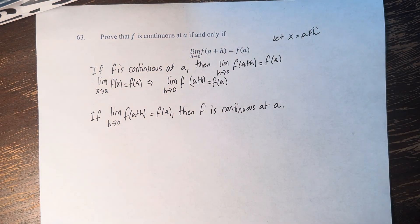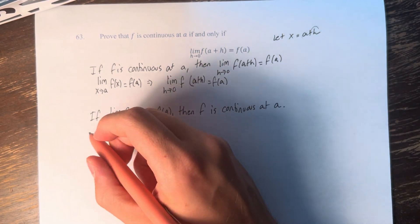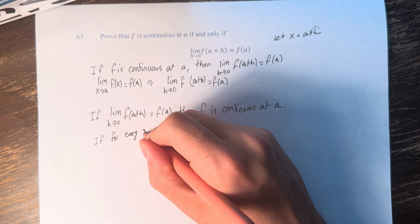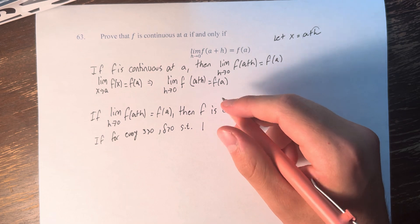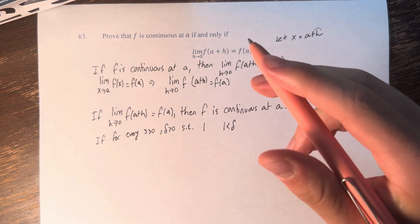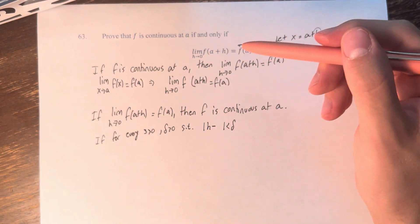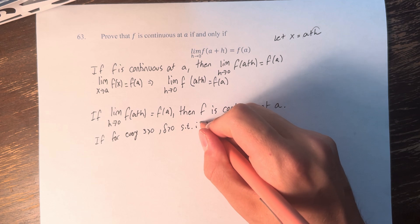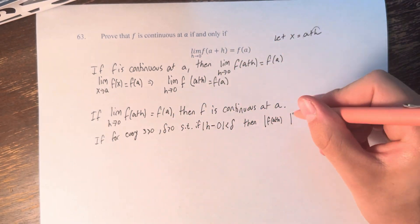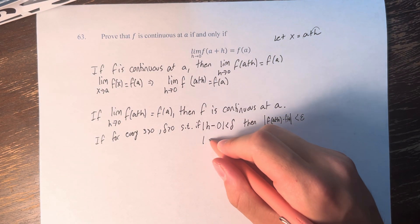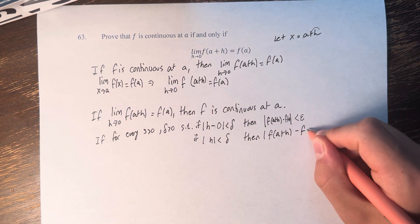Now we have to do the opposite, which is going to involve the precise definition of a limit. That states that the limit exists if for every epsilon greater than 0, there's a delta greater than 0, such that if the absolute value of x minus a is less than delta. In this case, we're not dealing with a function of x — the limit is taking on h. So this is the absolute value of h minus 0, such that if this, then f of a plus h minus f of a is less than epsilon. So this is saying if the absolute value of h is less than delta, then the absolute value of f of a plus h minus f of a is less than epsilon.